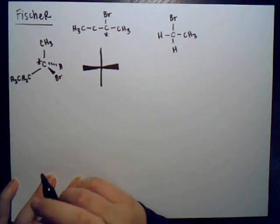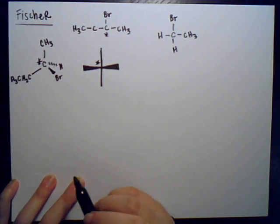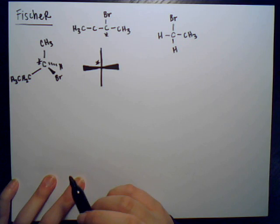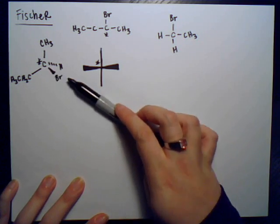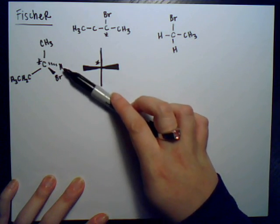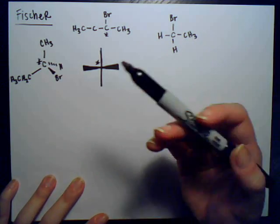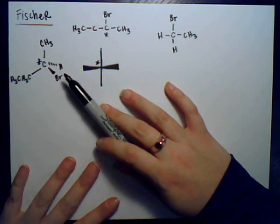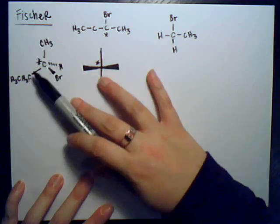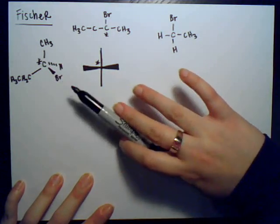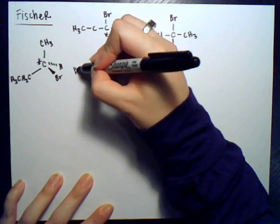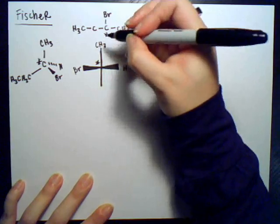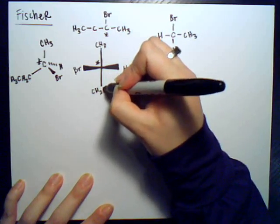That chiral center is the same carbon represented at the center of the Fischer projection. Now, how do we draw this? Imagine we're looking at the molecule from this direction, so the hydrogen and bromine are coming out towards us. We want the carbon chain on the vertical. Looking from this direction: hydrogen is here, bromine is here, CH3 on top, CH2CH3 on the bottom.